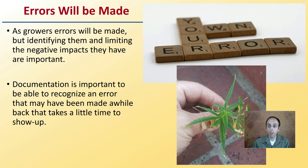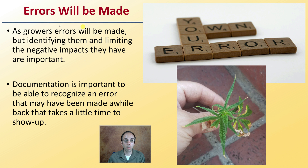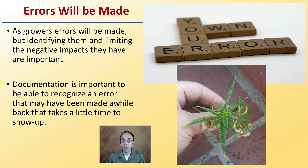First off, realize that when you're growing plants, errors will be made. As growers, errors will be made, but identifying them and limiting the negative impacts they have are important. Know your own errors — own your errors, if you will — realize them, own up to them, and then make adjustments from there.